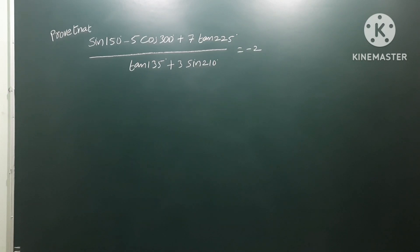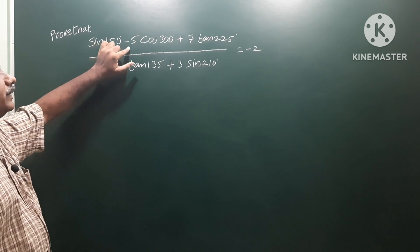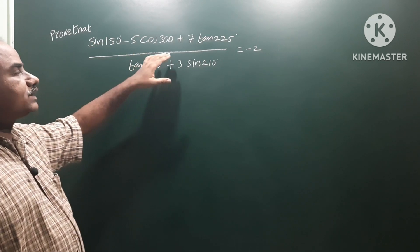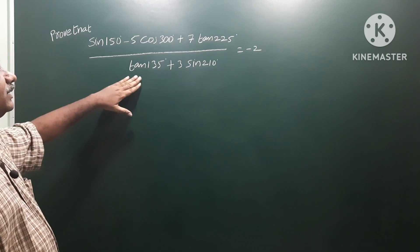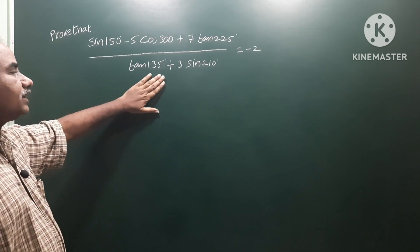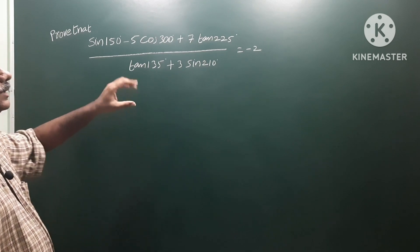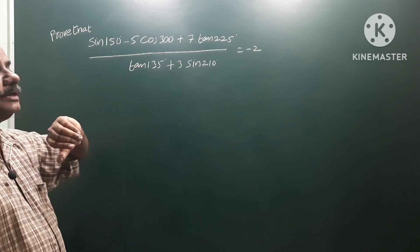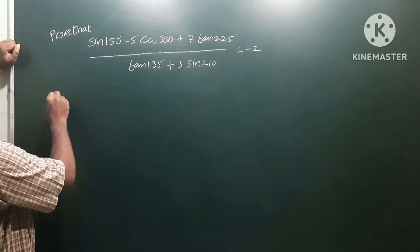Prove that sin150° minus 5cos300° plus 7tan225°, divided by tan135° plus 3sin210°, simplifies to minus 2. We need to find the solution by substituting values.